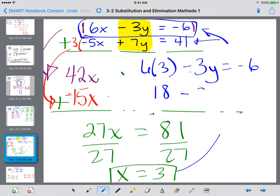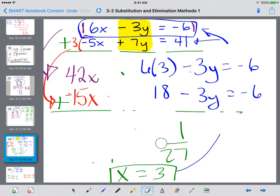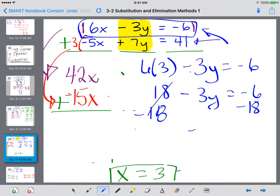So I get 18 minus 3y equals a negative 6. I'm just trying to clear a little space here. My next step is to subtract 18. And we have negative 3y equals a negative 24. Divide by negative 3, and y equals 8.